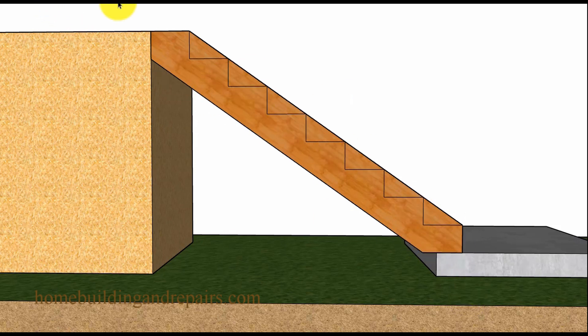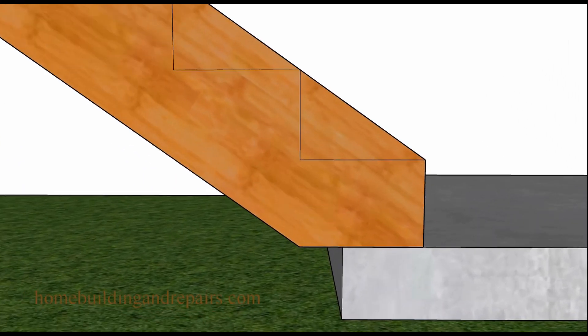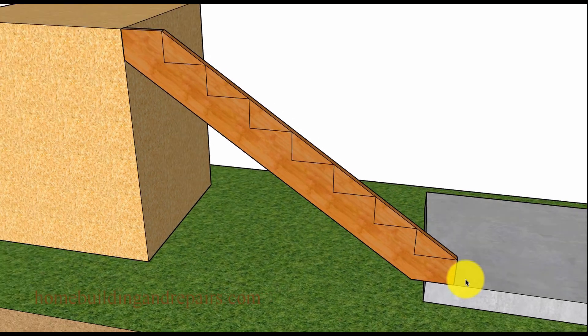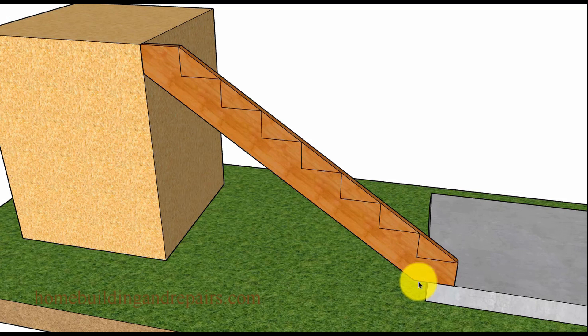So if you have something like this where you're off a little bit, in this case we're off about three and a half inches. You can always divide into the treads here. In this case, we had seven steps and three and a half inches. We divide that into seven, we get a half inch.